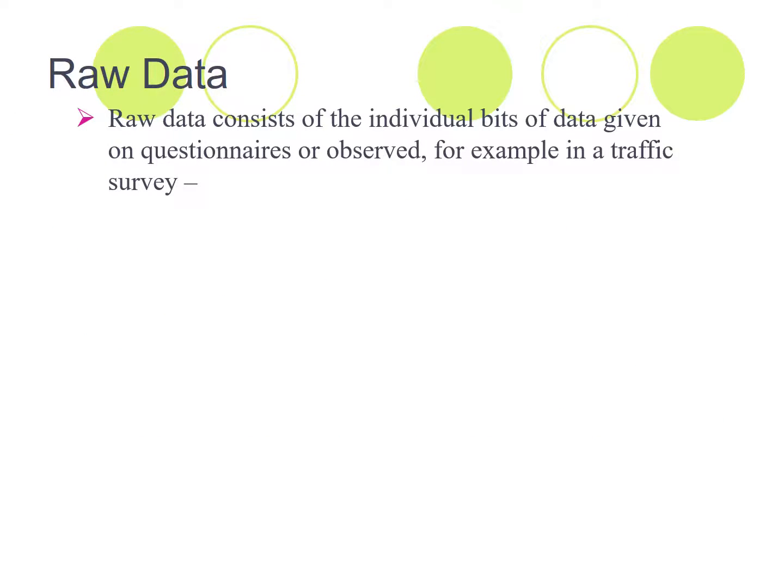So raw data. Raw data consists of the individual bits of data given, for example, on questionnaires or observed when you're doing some sort of research. For example, you might be doing a traffic survey, how many people are coming into the canteen, how many people are walking past the front of the hotel, what are the numbers that we have observed within the research.